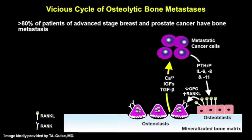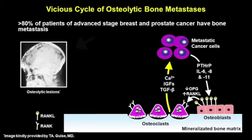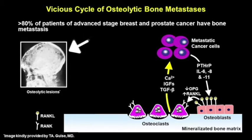Bone metastases occur when cancer cells disseminate from a primary tumor to the bones, and is a frequent complication of patients with breast and prostate cancer at advanced stages. Once cancer cells are in the bone, they disrupt the balance between bone formation and bone resorption and can cause fractures, severe pain, or spinal cord compression that reduce the quality of life of patients.